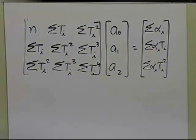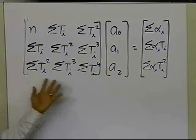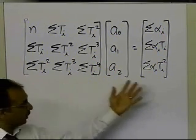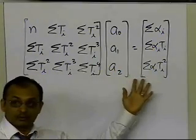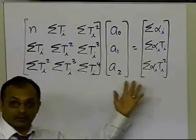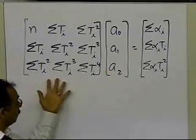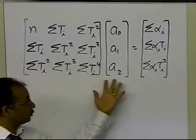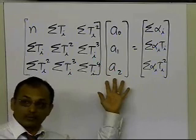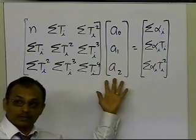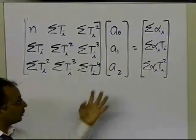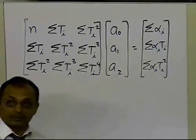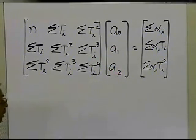The bottom line is to fill in the coefficient matrix and the right-hand side vector. Once you know both, you can find out what a0, a1, and a2 are — the three constants of the regression model. That's all there is to it.